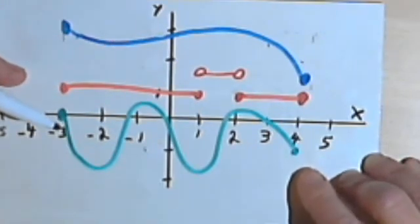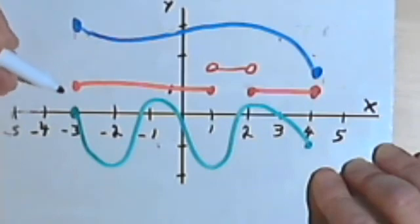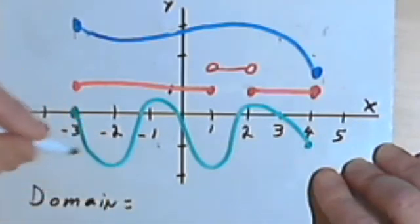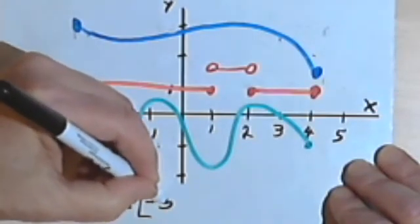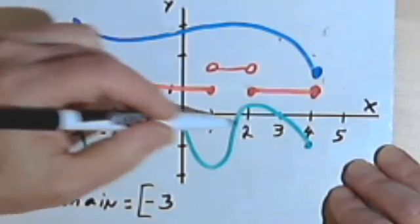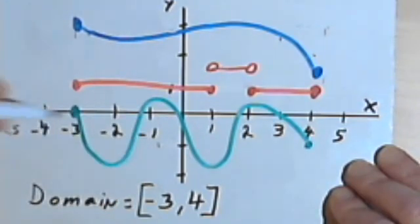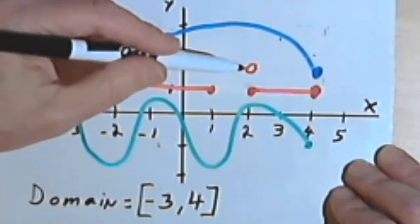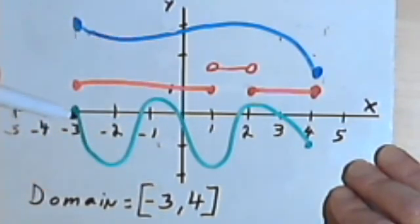So my domain for this graph, if I'm told to write it in interval notation, would be the interval starting with a closed bracket because I'm beginning at negative 3 and including negative 3, and then it goes all the way up to 4. It includes 4, so once again I'll have a closed bracket. The fact that the red graph jumps, that it's not totally continuous, doesn't really matter. All that matters is I can give an input on any of those graphs from any number from negative 3 up to and including 4.